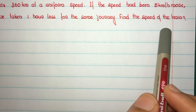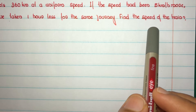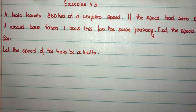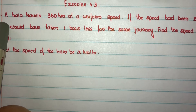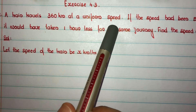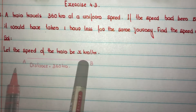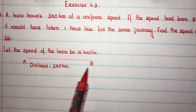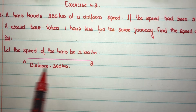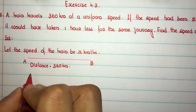We need to find the speed of the train. First step: variable assumption. Let the speed of the train be x kilometers per hour. A train travels 360 kilometers at a uniform speed, and that uniform speed is x kilometers per hour as assumed. Distance is 360 kilometers, traveled at x kilometers per hour.